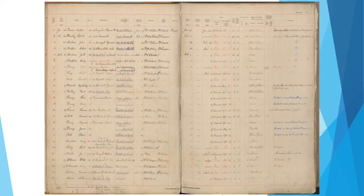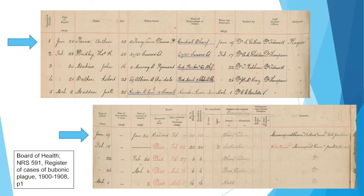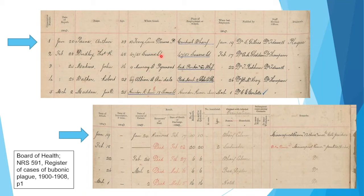Going back to the plague register, we can see the first page. Arthur Payne was found at 10 Ferry Lane, Dawes Point. He worked at Central Wharf where he was diagnosed. He recovered, was discharged on the 17th of February, and his occupation is listed as wharf labourer. We also see Thomas Ridley Dudley, who was at 47 to 51 Sussex Street in Sydney, last employed on the 17th of February, passing away on the 23rd of February. The next few cases also show 'died, died, died.'